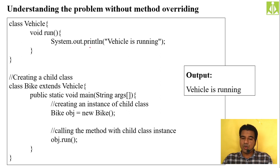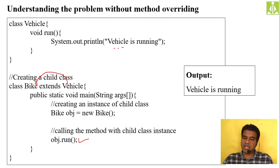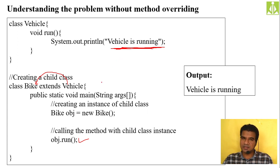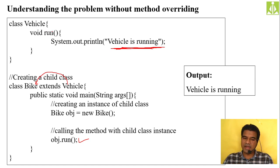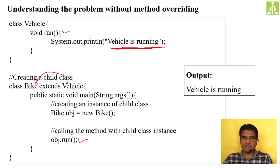The problem without method overriding is that whatever definition is provided by the vehicle class to the run method, that same one gets inherited into the bike class. But when you have created a bike object, you are not running the vehicle — you are running the bike. In Java you have the flexibility to override the method defined by the parent class. If the bike class doesn't override, it gets the same definition; but if it wants to give its own definition, that is possible through method overriding.